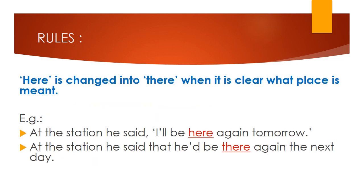'Here' is changed into 'there' when it is clear what place is meant. For example, at the station he said 'I'll be here again tomorrow.' In reported speech it becomes: he said that he'd be there again the next day. So 'there' refers to the station.